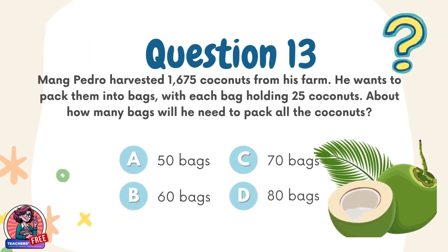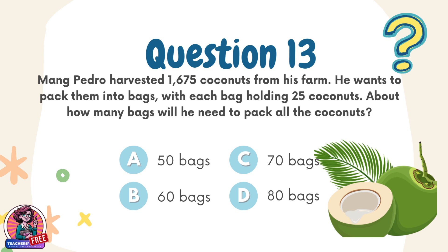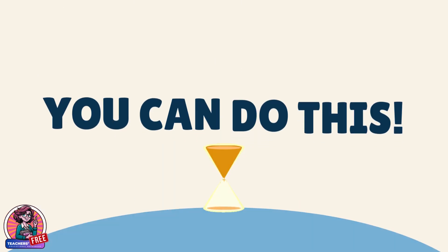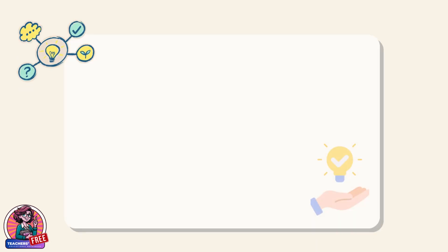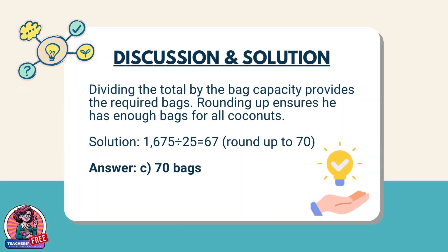Question 13. Mang Pedro harvested 1,675 coconuts from his farm. He wants to pack them into bags, with each bag holding 25 coconuts. About how many bags will he need to pack all the coconuts? Choices: A. 50 bags, B. 60 bags, C. 70 bags, D. 80 bags. Discussion: Dividing the total by the bag capacity provides the required bags. Rounding up ensures he has enough bags for all coconuts. Solution: 1,675 ÷ 25 = 67, round up to 70. Answer: C. 70 bags.